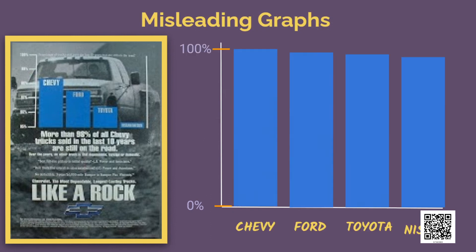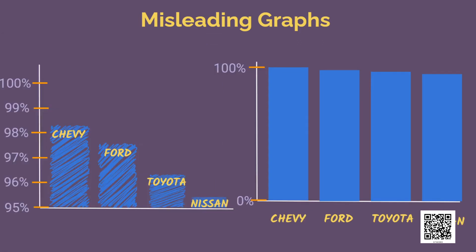Look at the same information plotted with the axis from 0 to 100%. See how it looks compared to the previous graph — not much of a difference between the brands. This is a very common method of showing graphs which can be misleading by distorting the axis. Although the graph plotted is correct, distorting the scale gives an exaggerated feeling of even tiny differences. This is more evident in bar graphs as we tend to assume the difference in the heights is proportional to the difference in values.